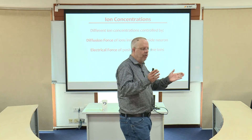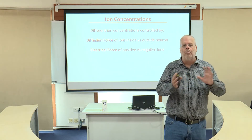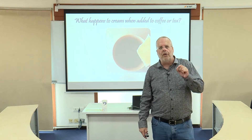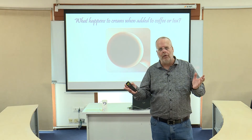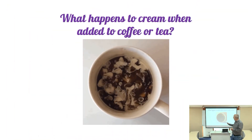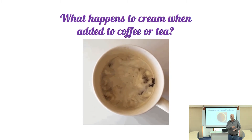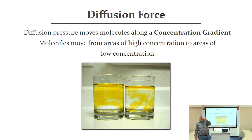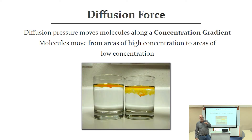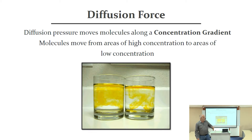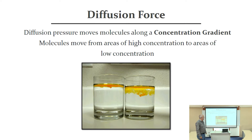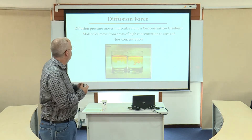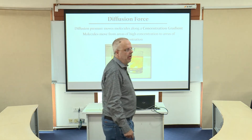So what's responsible for this uneven distribution of ions with respect to the neuron? It really comes down to two forces: the diffusion force and the electrical force. I love my coffee — I put a little bit of cream in there, and the cream diffuses throughout the entire cup of coffee. This is called the diffusion force. It means that any compound, if there's an area of high concentration and it can move to an area of low concentration, it will always move down its concentration gradient. Just like food dye placed at the top of water, it spreads throughout the entirety of the cup. Molecules move from areas of high concentration to low concentration.